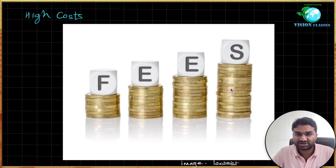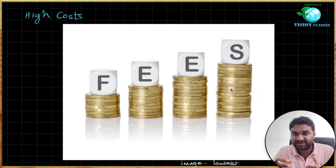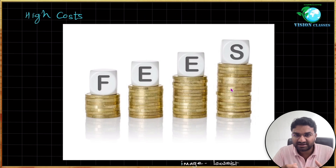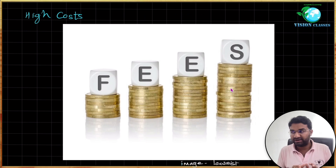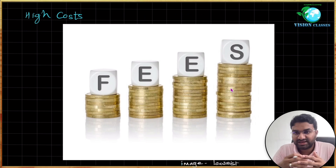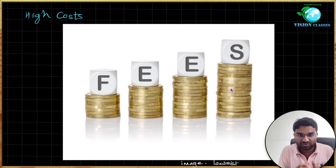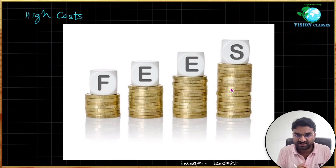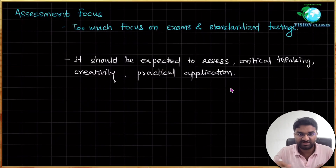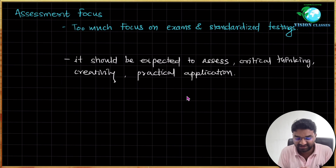The third shortcoming is high cost. Cambridge education is too expensive — registration, examination fees, textbooks, and sometimes additional tutoring all add up, creating a burden for parents and students. The Cambridge board is less accessible to students from lower-income families, creating inequality between high-income and low-income groups and acting as a barrier for the lower-income group.